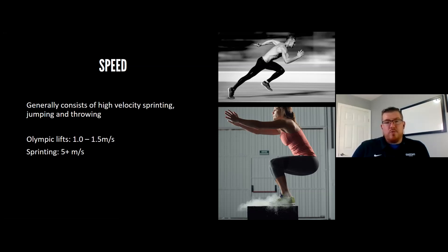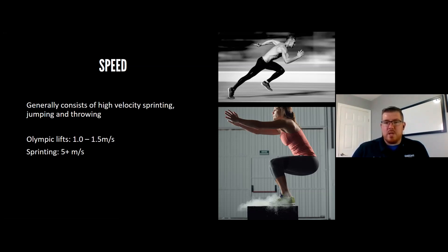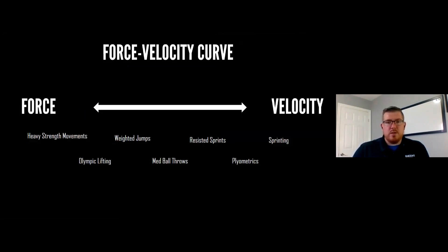To recap the progression across the curve: we go from max strength, to accelerative strength, to strength-speed using accommodating resistance with bands and chains, then to speed-strength, and finally to speed. The types of movements go: heavy strength movements, Olympic lifting, weighted jumps, med ball throws, resisted sprints, plyometrics, and sprinting.